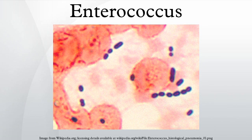Enterococcus is a genus of lactic acid bacteria of the phylum Firmicutes. Enterococci are gram-positive cocci that often occur in pairs or short chains, and are difficult to distinguish from streptococci on physical characteristics alone. Two species are common commensal organisms in the intestines of humans: E. faecalis and E. faecium.